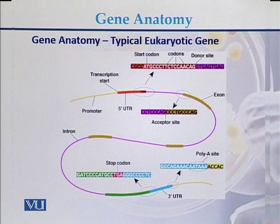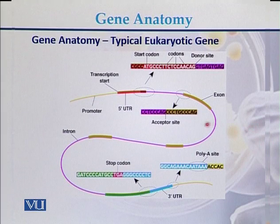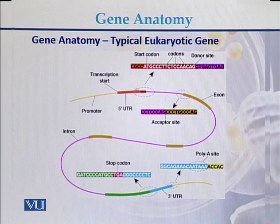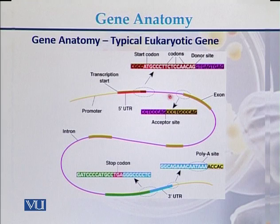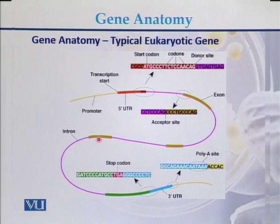This is the gene anatomy of a eukaryotic gene, because there is a difference between the anatomy of a prokaryotic gene and a eukaryotic gene. Eukaryotic genes are usually complex in nature, consisting of exons and introns. We can see the promoter region of the gene, the five-prime UTR regions, and then there are introns and exons alternating throughout the gene.